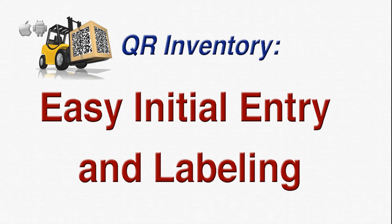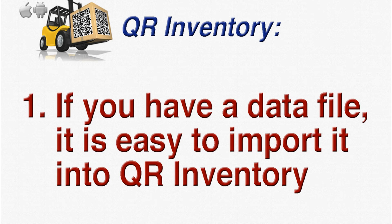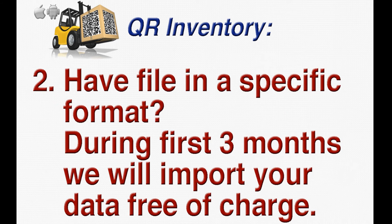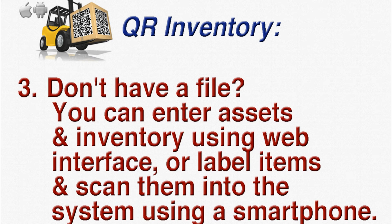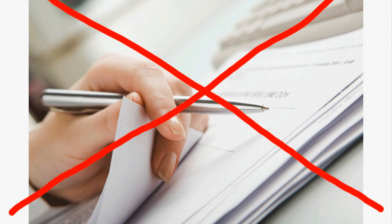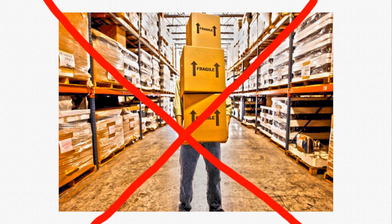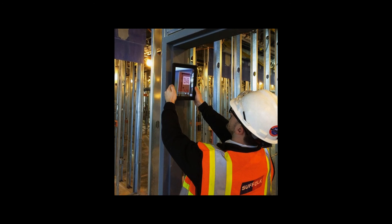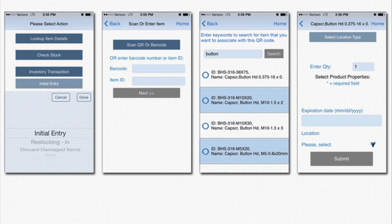QR Inventory offers really easy initial entry and labeling. Don't know how to start organizing assets and inventory? QR Inventory makes it easy and gives you lots of options. If you have a data file, import it into QR Inventory. Do you have a file in a specific format and don't want to change it? During the first three months, we will import your data for you in the format you have, free of charge. Don't have a file? You can enter assets and inventory manually using the web interface, or label items and immediately scan them into the system using a smartphone. With QR Inventory, there's no need to do manual counts with paper and pencil — just label an item, scan it, and enter location and quantity in one swipe. The whole process takes hours rather than days or weeks.